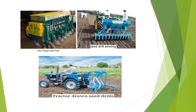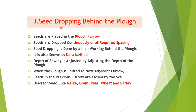Tractor-drawn seed drills hold seeds in a hopper, create furrows, drop seeds into them, and cover them with disc openers — capable of making four or five rows simultaneously. Another method is seed dropping behind the plow: seeds are placed in the plow furrow, dropped continuously or at required spacing by a person working behind the plow. This is also known as the kera method — a traditional method where depth of sowing is adjusted by the depth of the plow.